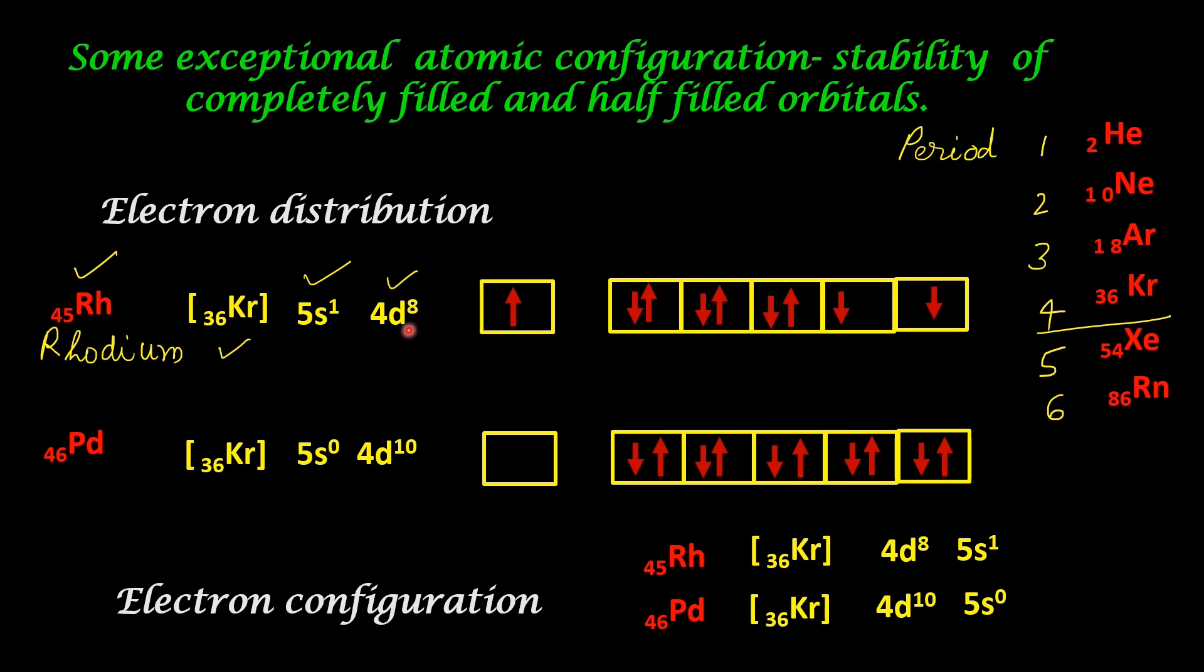When it is 5s1 and 4d8, the d sub shell has octet structure, so more stable. In the case of palladium, the electron distribution becomes krypton 36, 5s0, 4d10. By shifting the 5s electron to 4d, the 4d sub shells get completely filled up. We have already seen in the beginning that completely filled orbitals also give stability. We have already discussed the reasons. These are a few elements with exceptional electron configuration.